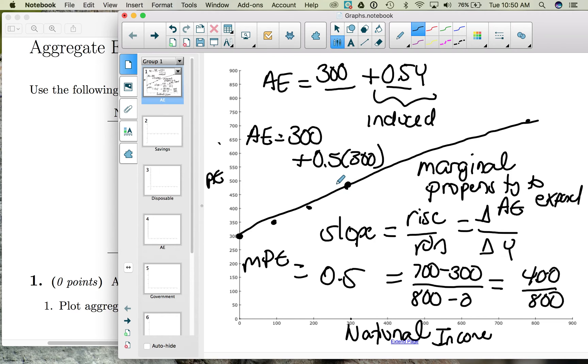Part of that 450 is the autonomous spending we do regardless of income level plus an additional 150 of induced spending. That's the spending that depends on the level of income.